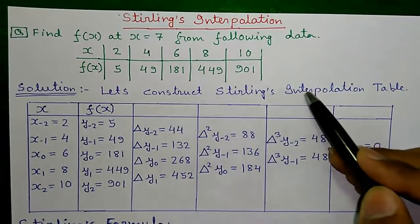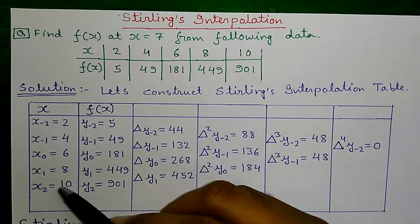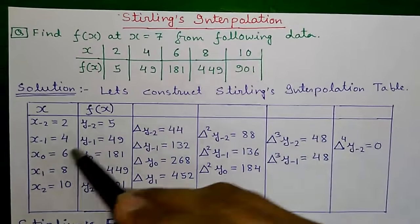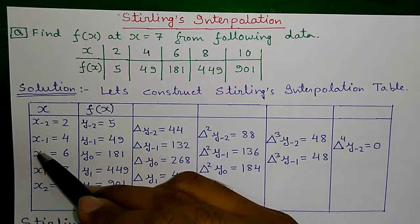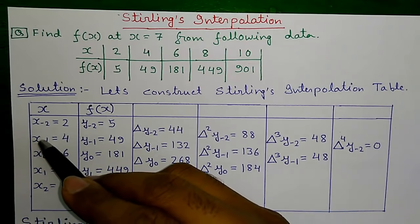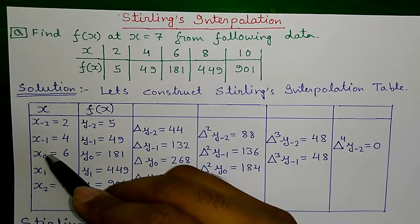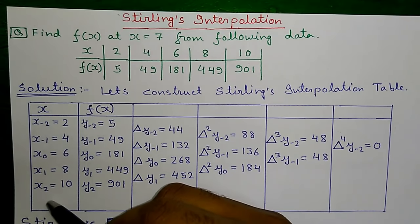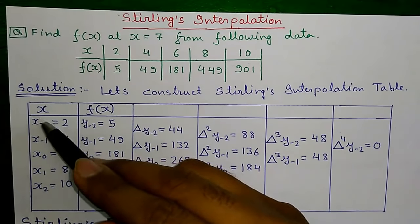Let's construct the Stirling's interpolation table. It is very easy. First, write down all x values given in the question. The middle value of x will be x₀, and values above x₀ will be x₋₁, x₋₂, and so on — negative increment. Values below x₀ will be x₁, x₂, and so on — positive increment. It is just the numbering; the actual values will not change.